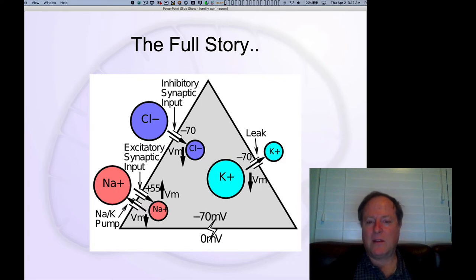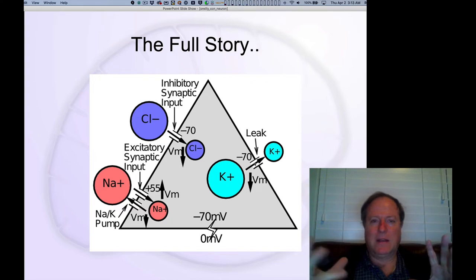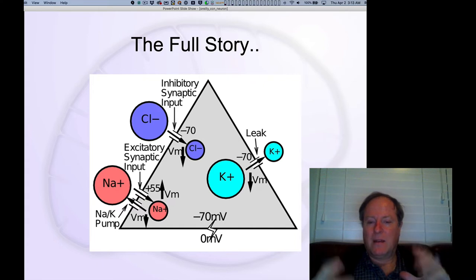There are channels called leak channels which are always open. This is kind of counterintuitive. That's why they're called leak, because they're leaky, like a hole in a bucket. They're just always there and they're actually beneficial. We don't want to plug them up. They allow, specifically, potassium ions to flow in and out of the cell.